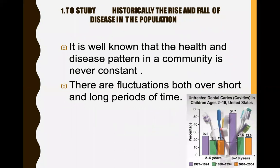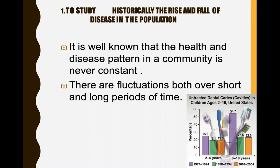To study historically the rise and fall of disease in the population: it is well known that the health and disease pattern in many communities is never constant. There are fluctuations both over short and long periods of time. Different communities have different patterns — for example, if you go to Liari, they have a different pattern; if you go to the Defense area, it has a different pattern.